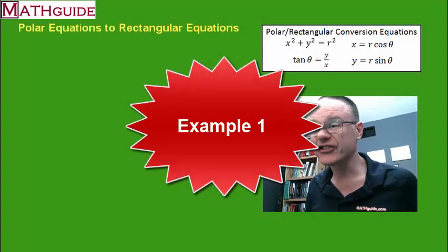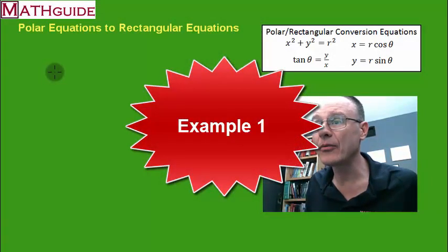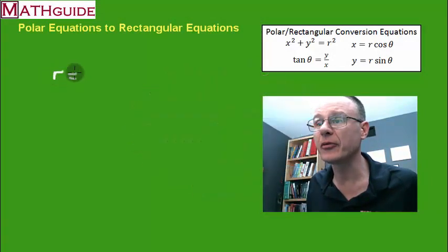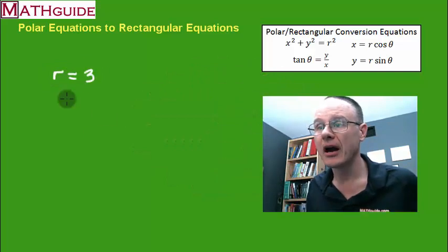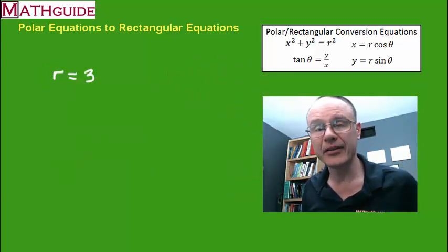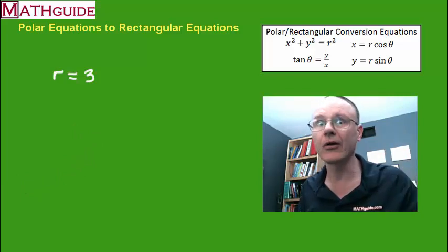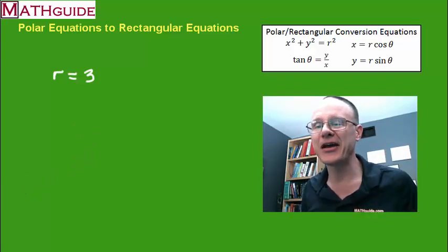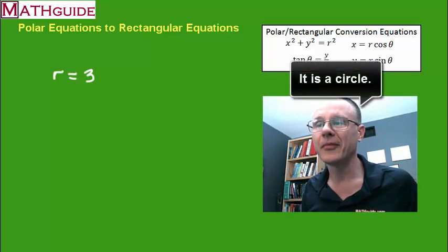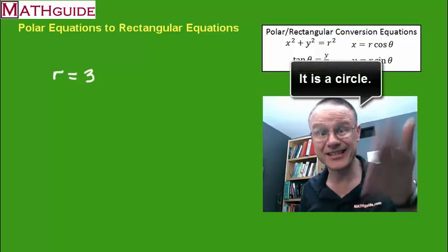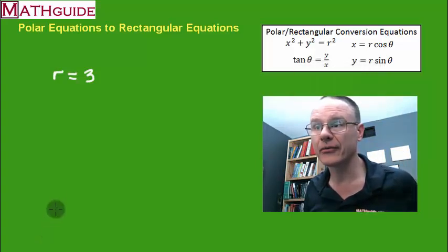Let's take a look at our first example. So let's say we were given this really simple polar equation, r equals 3. Anything that has a radius of 3, or all the points, the locus of points that have a radius of 3 would be a circle. So picture a circle. We know that's the center at the origin, radius of 3, obviously.